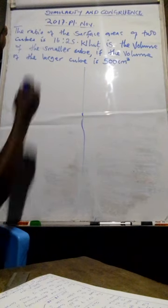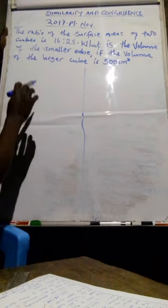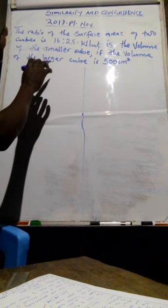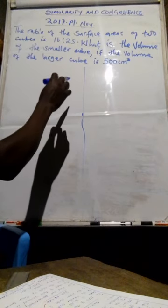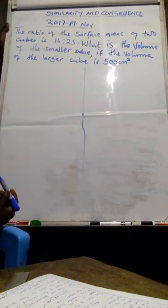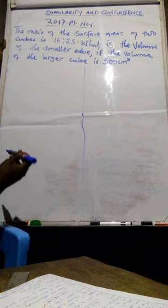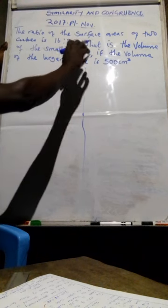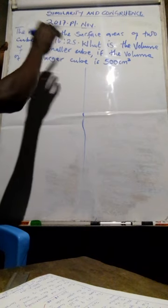The ratio of the surface areas of two cubes is 16 to 25. What is the volume of the smaller cube if the volume of the larger cube is 500 cubic centimeters? So in order for you to solve that question, what you need to know first of all, you have to interpret from this statement: the ratio of the surface areas of two cubes is 16 to 25.